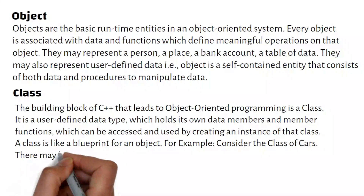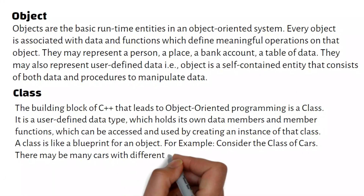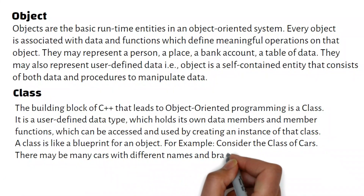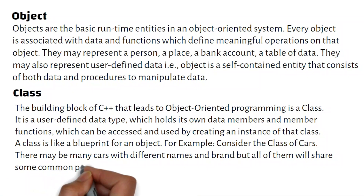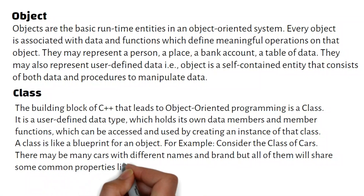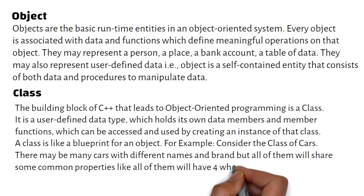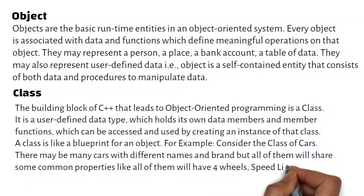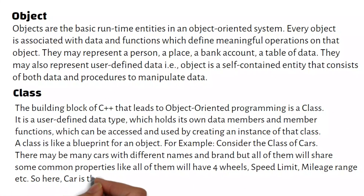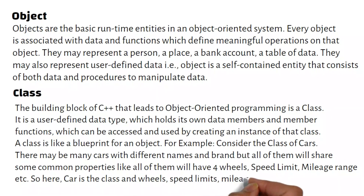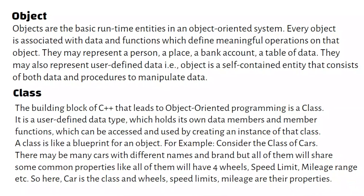A class is like a blueprint for an object. For example, consider the class of cars. There may be many cars with different names and brands, but all of them will share some common properties, like all of them will have four wheels, speed limit, mileage range, etc. So here, car is the class and wheels, speed limits, and mileage are their properties.